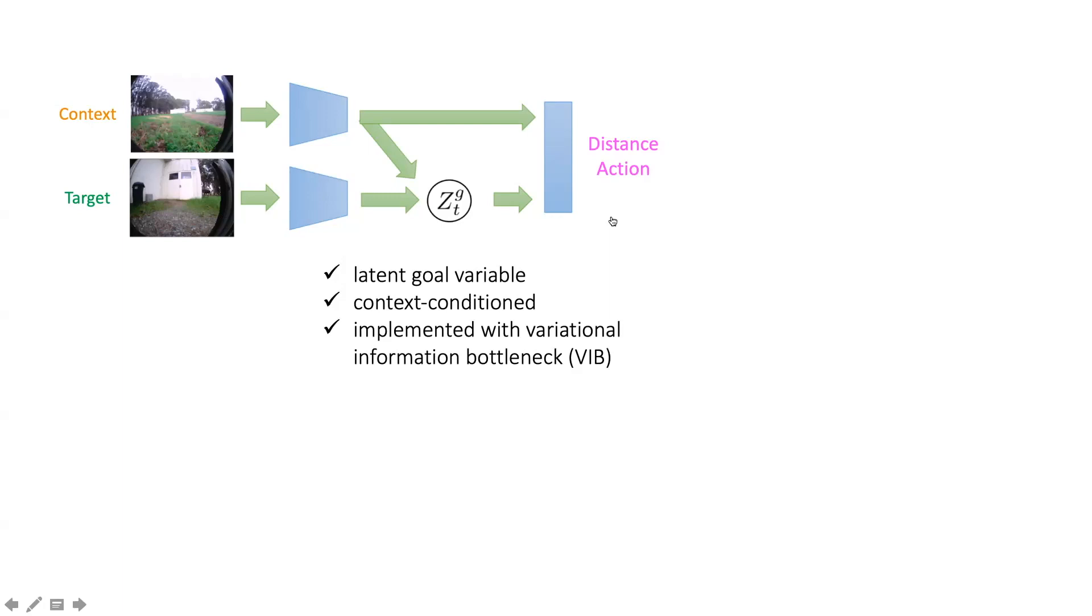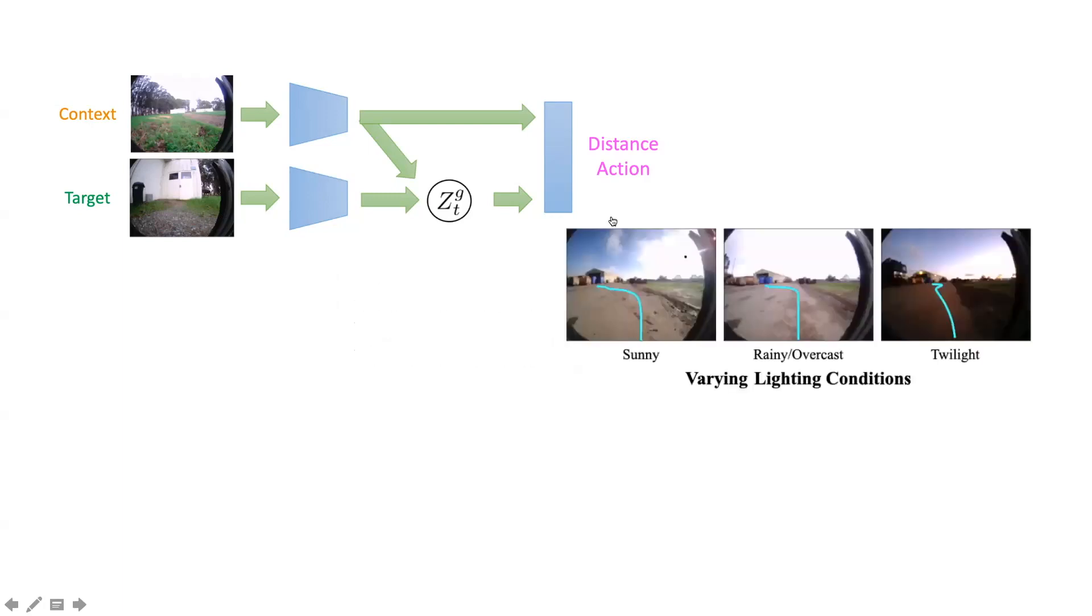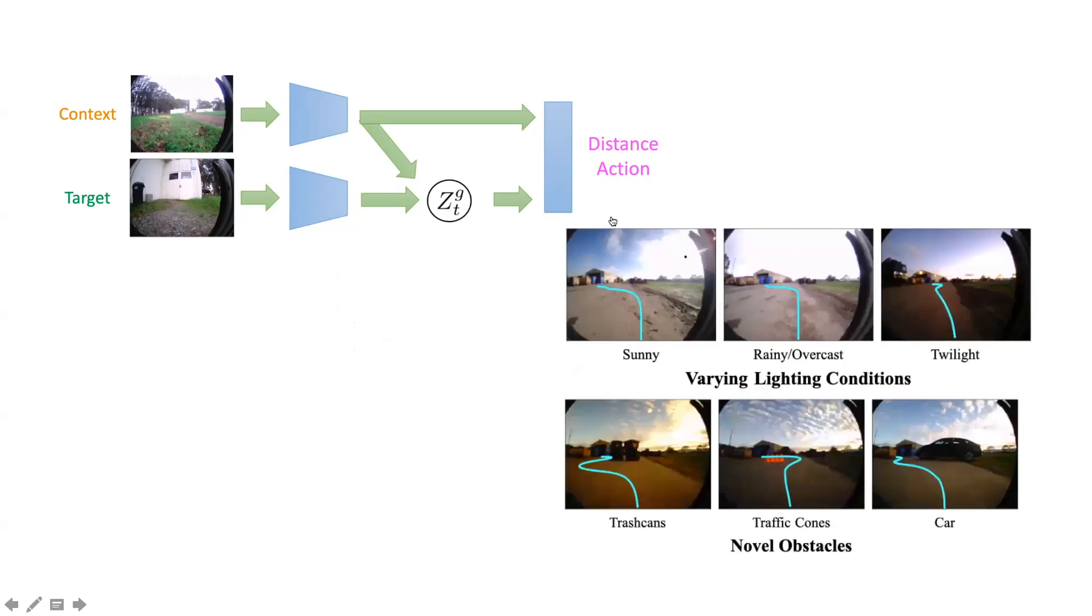Since we are compressing the observations, our representation is encouraged to only contain information salient to the task at hand and ignore the information about appearance, weather, or dynamic obstacles that do not affect the distances or actions of the robot.